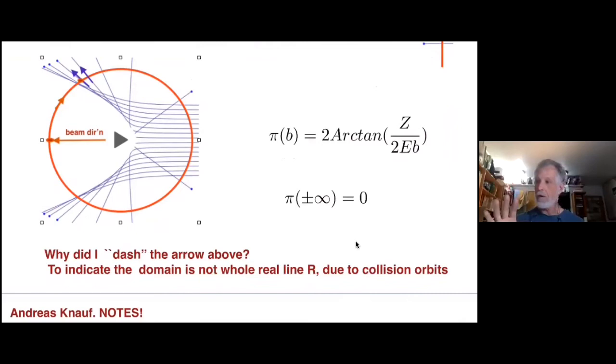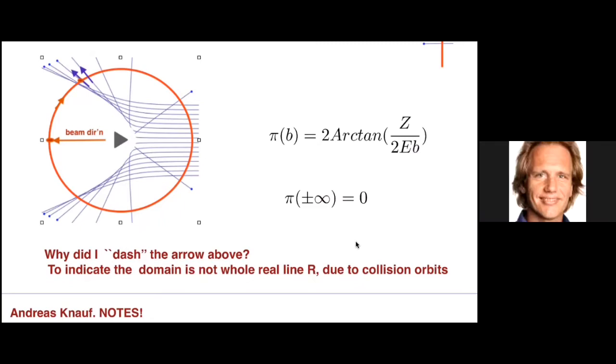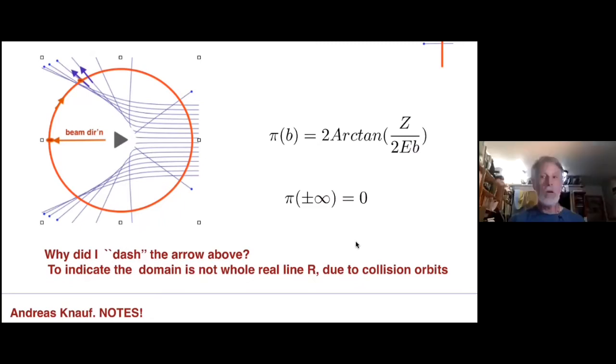Let me pause for a moment and see if there's any questions yet in the audience. So I suppose it's the same for Kepler, this map, or is it different? For the repulsive case, the only difference is the sign of Z. So Z is positive or negative. It's remarkable. It's exactly the same. The differential cross-section for Kepler and for Rutherford, for repulsive or attractive, is exactly the same. I learned this from the book of Knauf. Knauf has a nice book on classical mechanics.